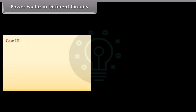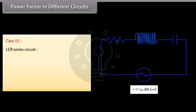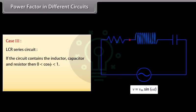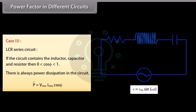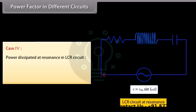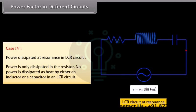Case 3 — LCR series circuit: if the circuit contains the inductor, capacitor, and resistor, then cos(φ) lies between 0 and 1, and there is always power dissipation: P̄ = Vrms × Irms × cos(φ). Case 4 — Power dissipated at resonance in LCR circuit: power is only dissipated in the resistor. No power is dissipated as heat by either an inductor or a capacitor in an LCR circuit.